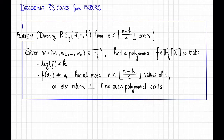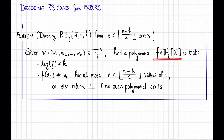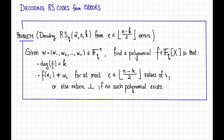More formally, suppose we are given some received word w, so w1, w2, ..., up to wn, in Fq^n. Our job is to find a Reed-Solomon codeword that is close to this w. That is, we want to find some polynomial f over Fq that has degree strictly less than k and that doesn't disagree with w too much. Quantitatively, the number of positions i on which f(αi) is not equal to wi should be at most e, which is some number less than or equal to the floor of (n minus k) divided by 2. And otherwise, if no such polynomial exists, we should return the ⊥ symbol.